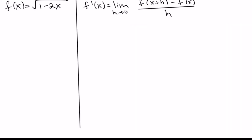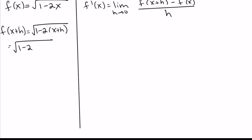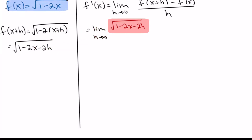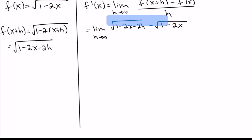Let's jump into this next one. We'll start by figuring out f of x plus h — remember that just means taking your equation anywhere you see an x and replacing it with x plus h. It's good to use parentheses to avoid sign mistakes. We distribute that negative 2 through to both terms, and plugging in gives us the square root of (1 minus 2x minus 2h). And f of x is just the original. On the bottom, nothing has changed — we've just got h.